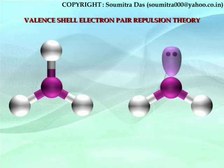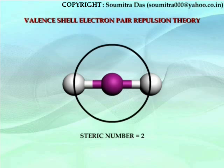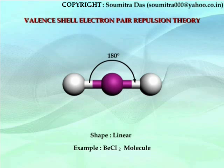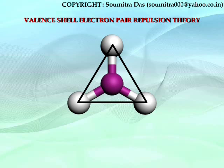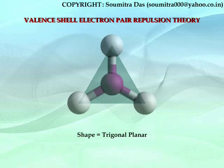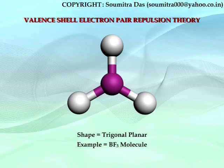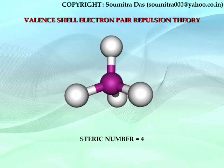We will first try to understand the layout of bonding electron pairs only. When steric number is 2, the electron pairs occupy diametrically opposite positions and the molecule is linear, with a bond angle of 180 degrees. When steric number is 3, electron pairs occupy the vertices of an equilateral triangle to minimize the repulsion between them. The shape is trigonal planar and bond angle is 120 degrees.